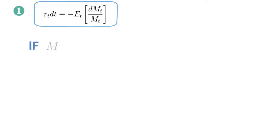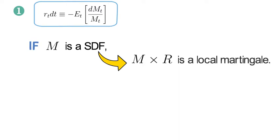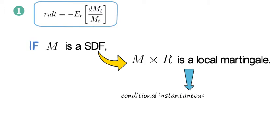If m is a stochastic discount factor, then m times capital R needs to be a local martingale. Now that says that the conditional instantaneous expected change of m times R needs to be zero.